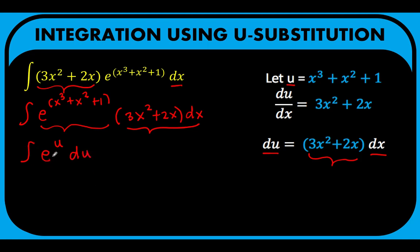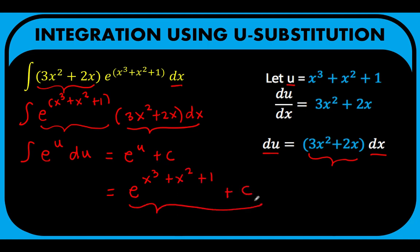What is the antiderivative of e to the u du? The antiderivative of e to the u is itself plus a constant. So this is equal to e to the u plus c. We now have an antiderivative in terms of u. Since u equals x cubed plus x squared plus 1, we can now unsubstitute u. This becomes e raised to (x cubed plus x squared plus 1) plus c. This is our final answer.